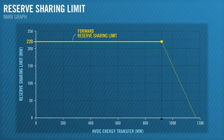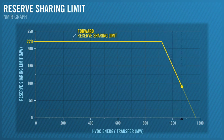As the HVDC energy transfer approaches its maximum, our forward reserve shearing limit starts to decrease.